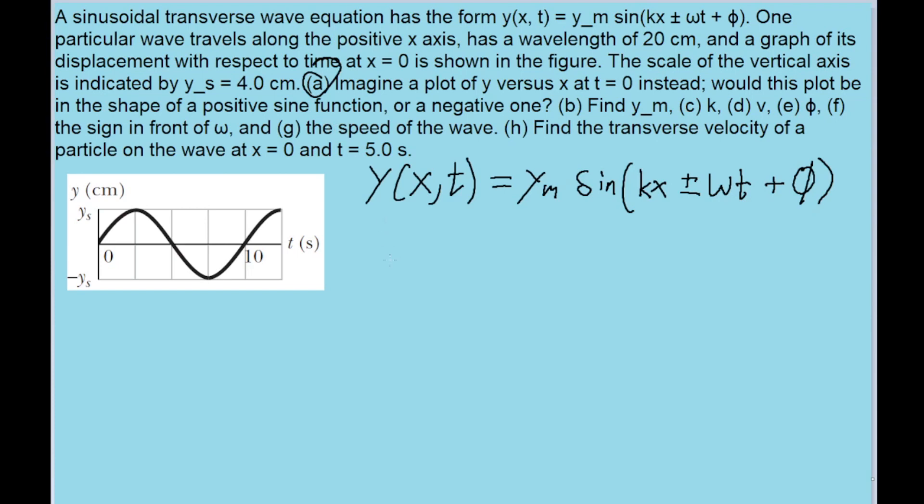So we start off with, in my opinion, the hardest part of the problem, in which we have to take the plot that the problem gives us of y, the transverse position of the wave, with respect to time, and we have to decide what the graph of y versus x would look like. The graph given to us is a sine wave that starts off rising, which means that it is a positive sine wave, and we want to know whether a graph of y versus x would also be a positive sine wave, or if it would be a negative sine wave. Now you could probably figure out the answer to this problem by visualizing it in some way, or drawing some pictures, or making an animation in your head, or testing out some values.